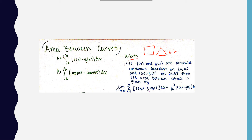But when you have a graph with two functions, you have to use an integral to find the area. So if one of the functions was named f(x) and the other one was named g(x), and they are both piecewise continuous functions on an interval from a to b, and f(x) was greater than g(x) on that interval, then the area between the curves would be the integral from a to b of f(x) minus g(x). Remember, f(x) is always greater than g(x).